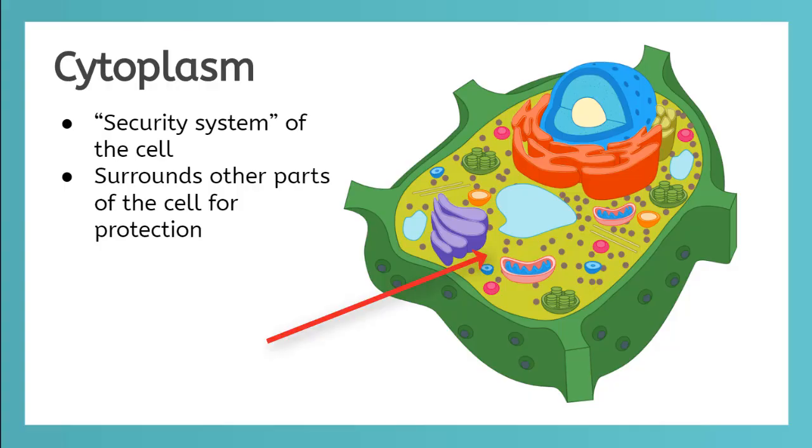The yellowish gel inside the cell wall is called the cytoplasm. The cytoplasm holds the organelles in place and protects them from damage. Cytoplasm is like the security system of the cell.